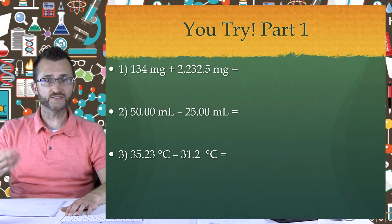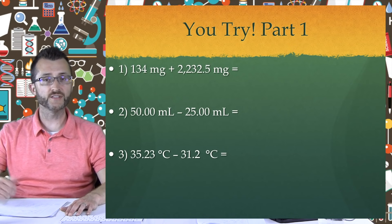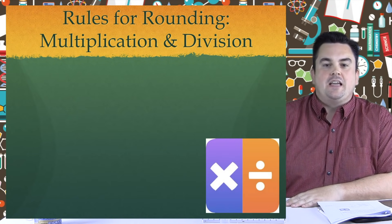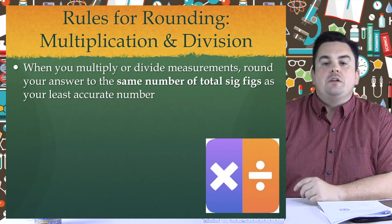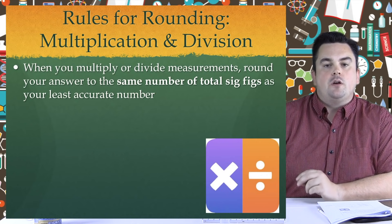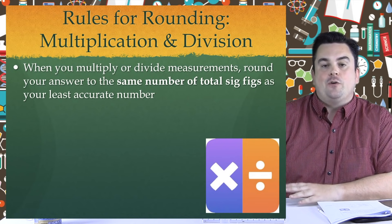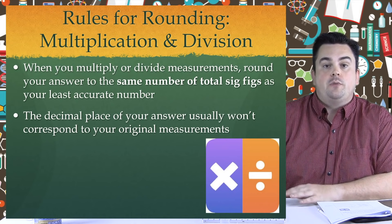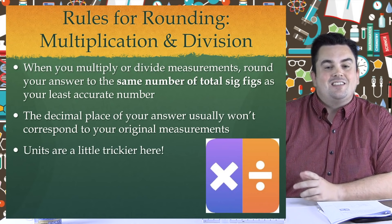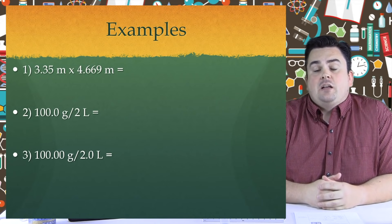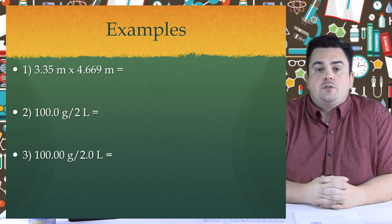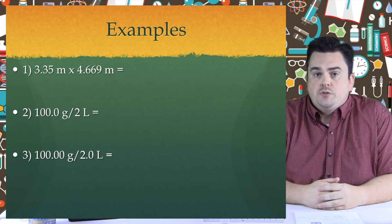You try part one: do these addition and subtraction problems, write an unrounded answer with units, and then using the new sig fig rules write a final answer. Rules for rounding — multiplication and division: when you multiply or divide measurements, round your answer to the same number of total sig figs as your least accurate number. The decimal place of your answer usually won't correspond to your original measurements, and units can be a little tricky here.